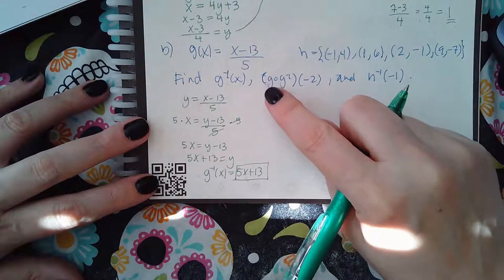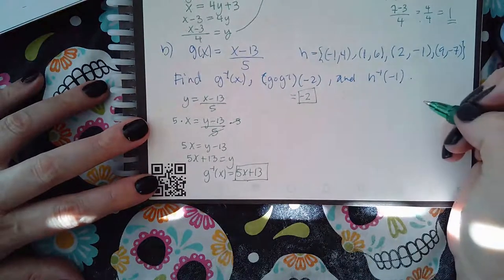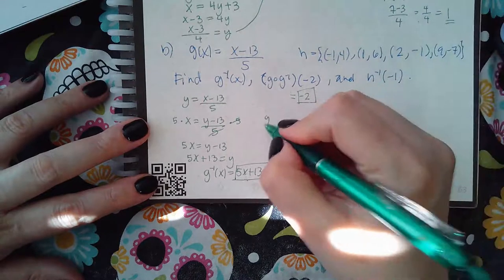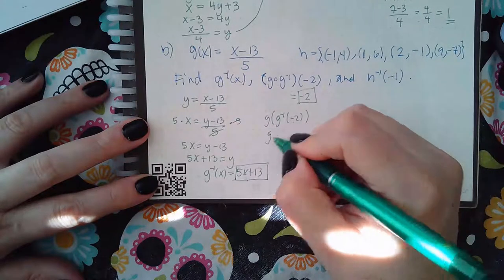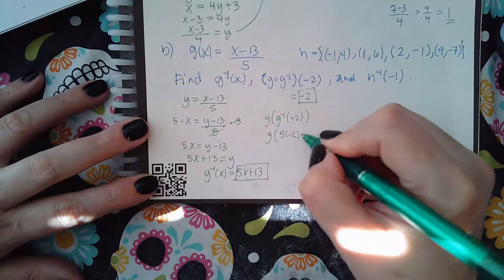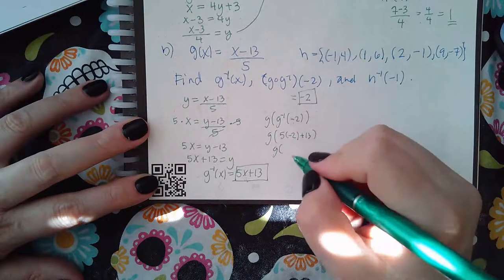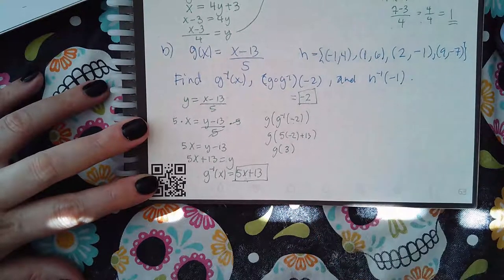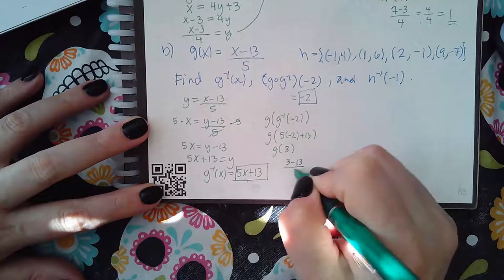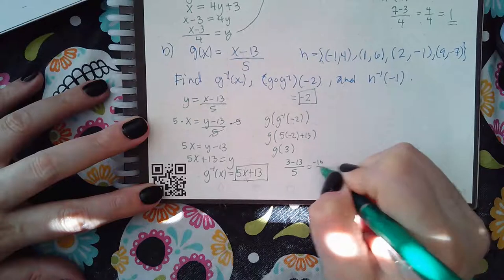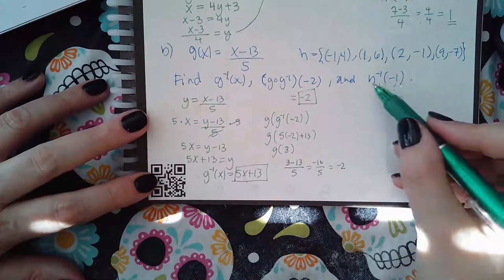You already know that a function and its inverse give back the input value, but here's the math. Plug negative 2 into the inverse first: negative 10 plus 13 equals 3. Then plug 3 into g: 3 minus 13 over 5 equals negative 10 over 5, which is negative 2 — exactly what we expected.